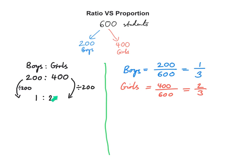Or in other words, for every two girls there is one boy. In a proportion, we are writing the quantity of one category out of the total — for example, the quantity of girls out of the total.